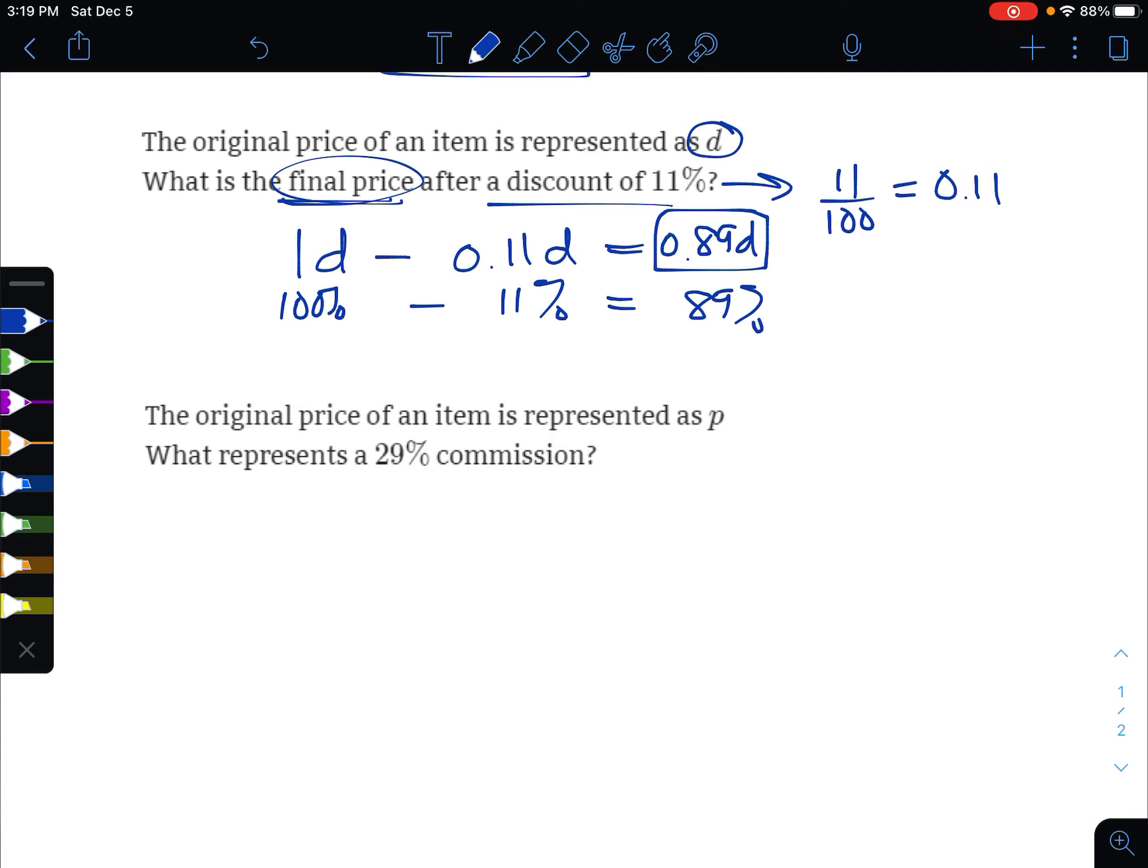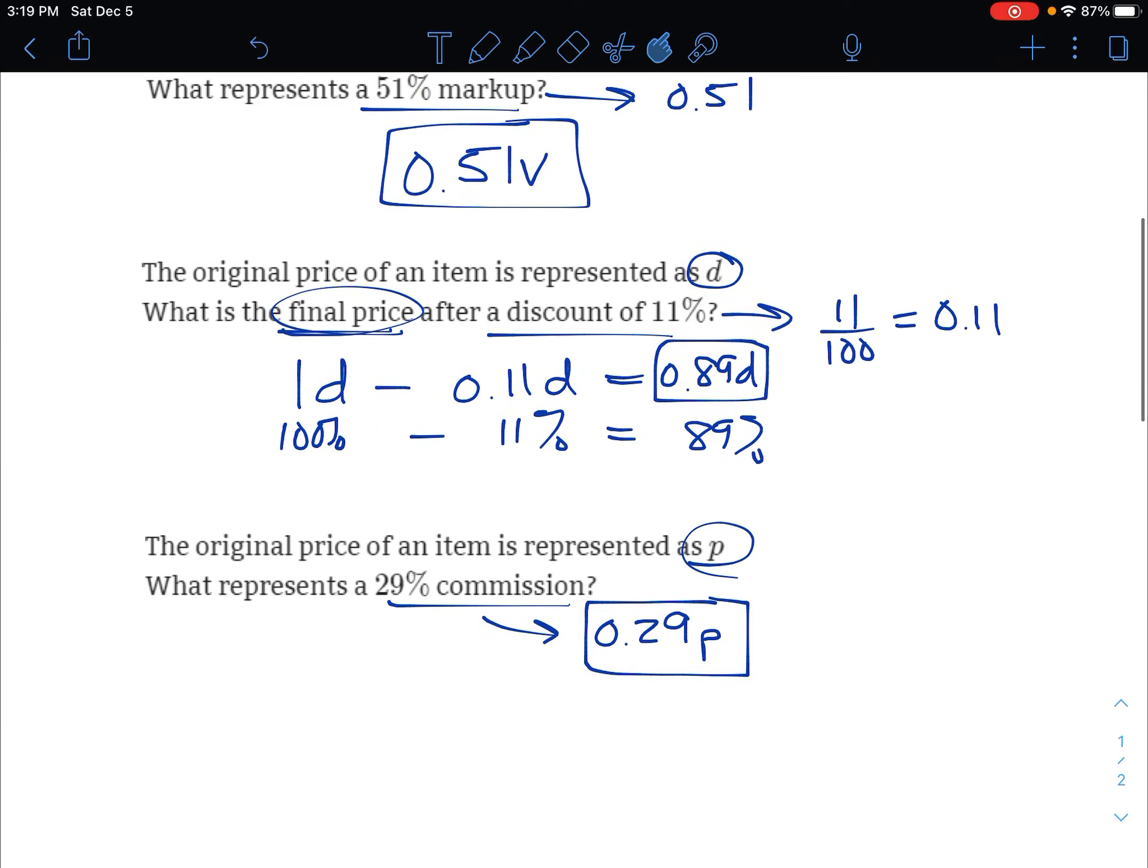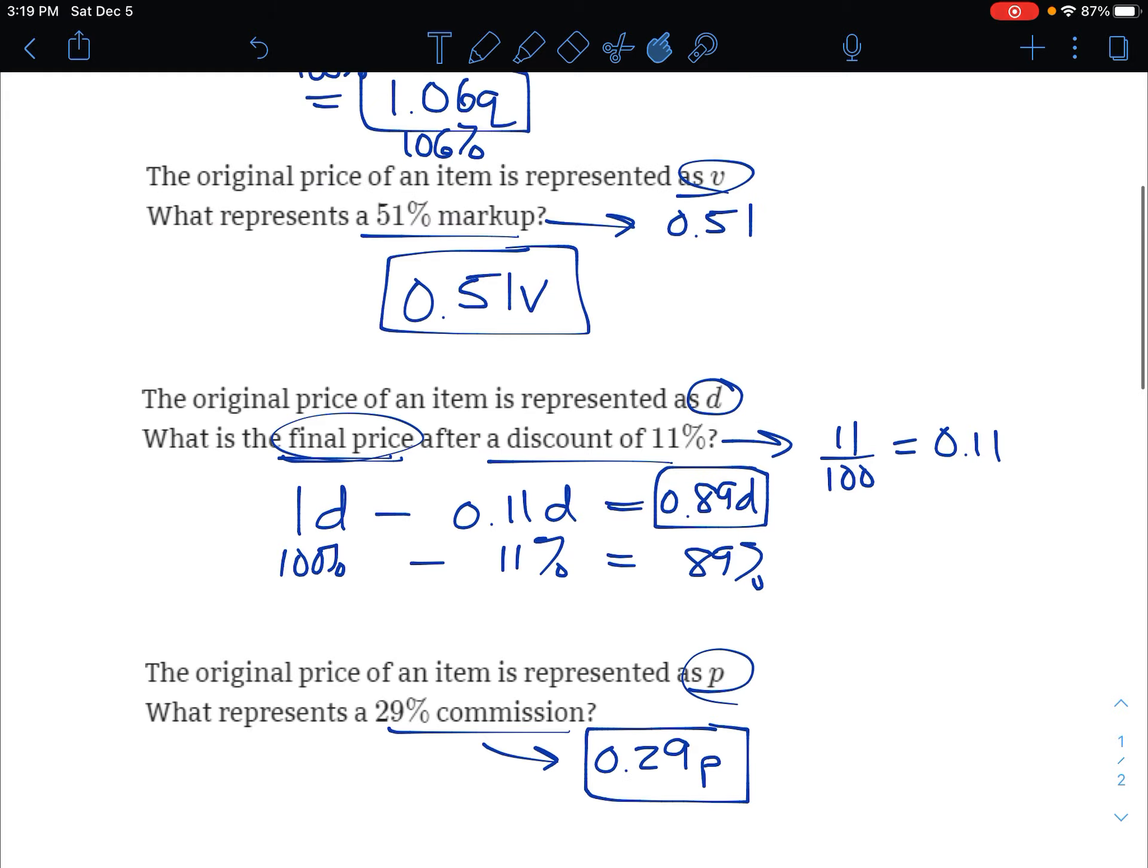If you see commission, commission is never added or subtracted. It's just a percent of the sale that goes to the salesperson. So of p in this case, 29% commission—well, that would be 0.29, I want that of p, so just times p. Again, we're never going to add or subtract on a commission because a commission is just part of the sales price that goes to someone. You're not adding, it doesn't make your bill go up or down. And that's how we write some expressions based on given variables.